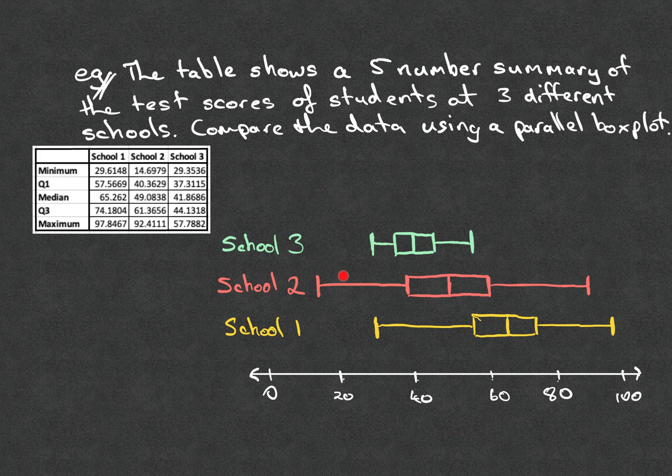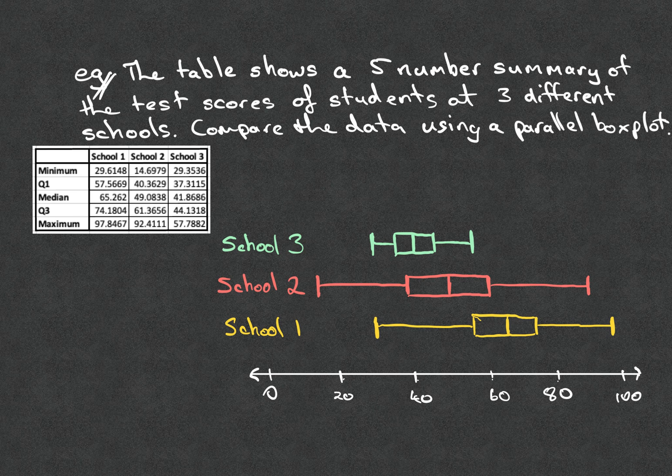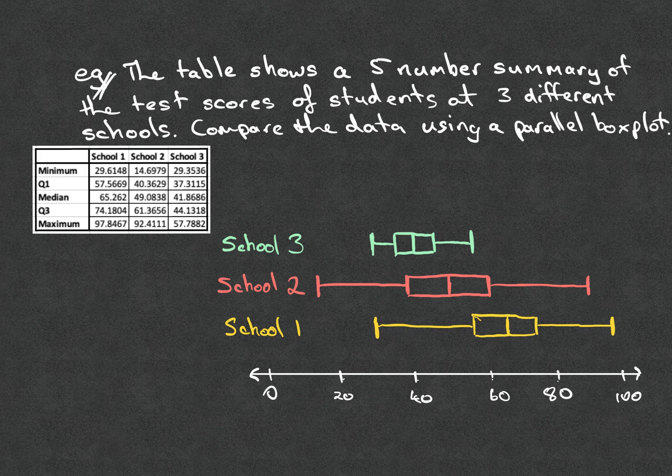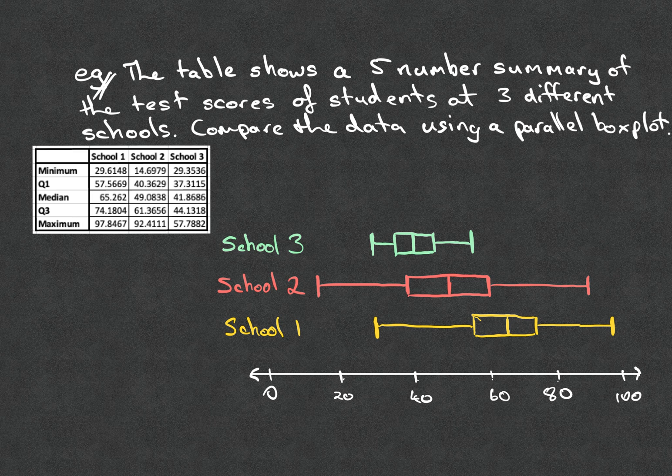So that is an example of a stacked box plot or parallel box plot where we can show the numerical data across different categories, in this case schools, and then have a look at different ways of comparing the data sets from those three different categories.